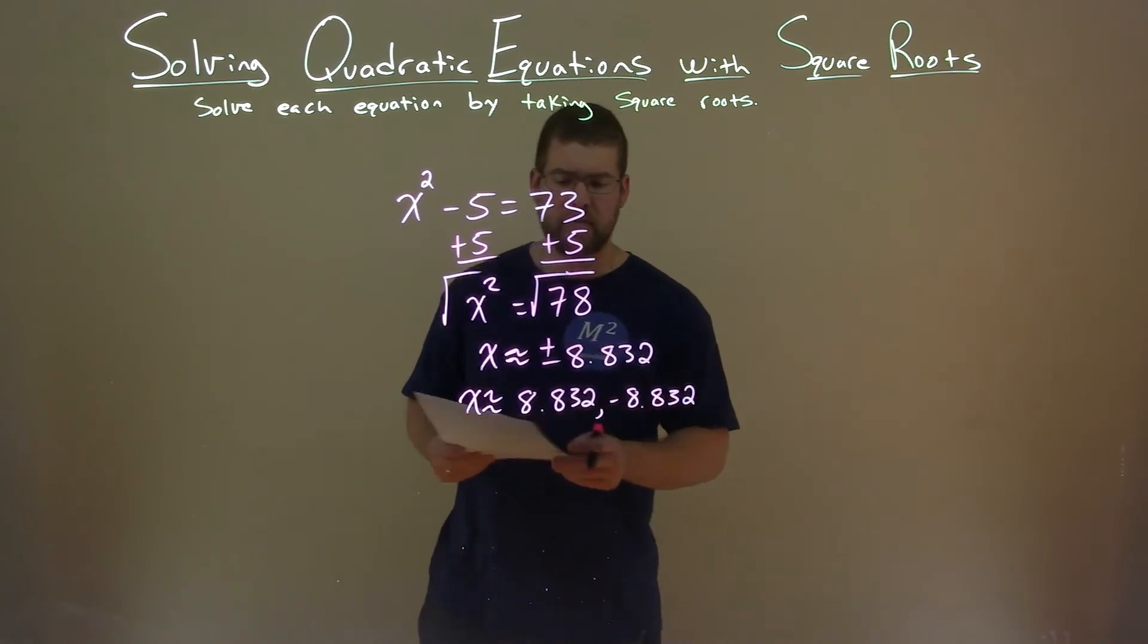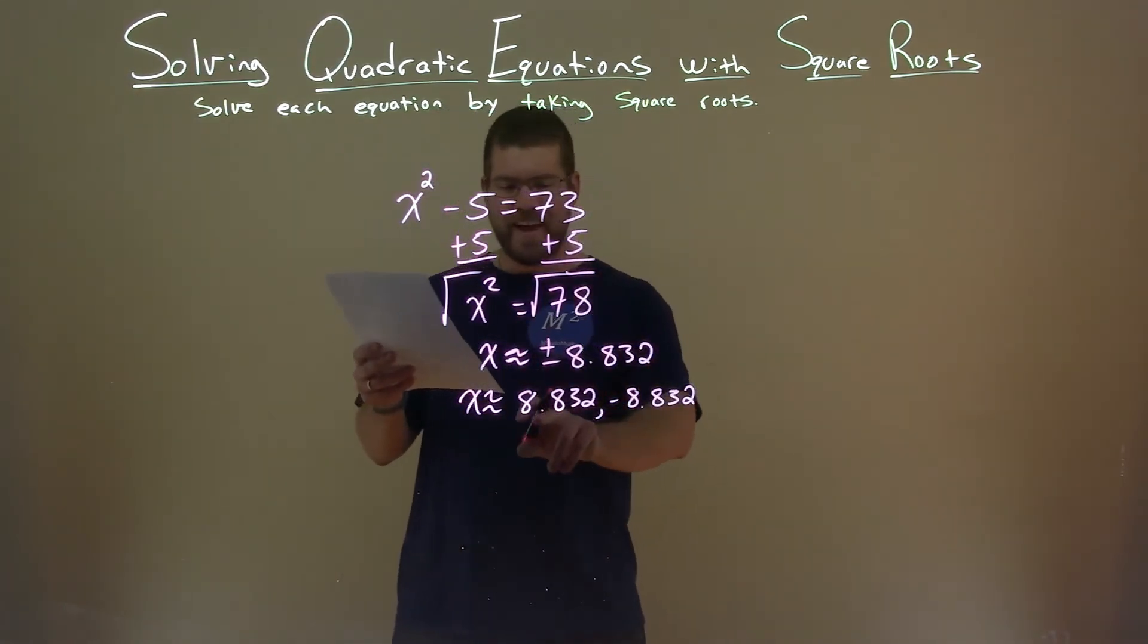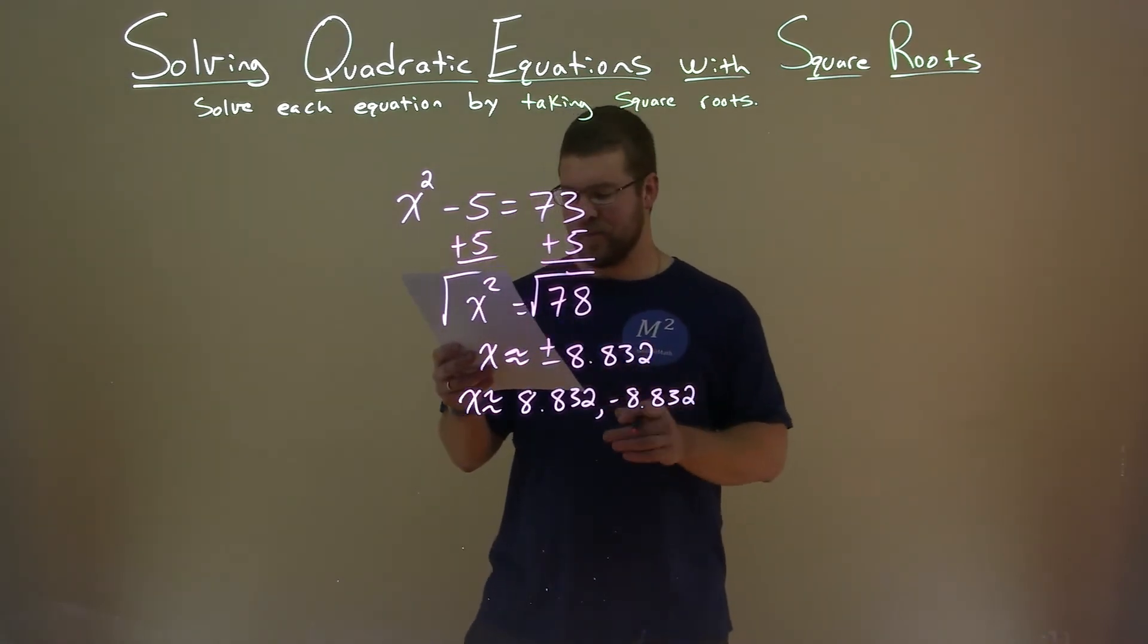So again, our final answer is x equals approximately 8.832, and then negative 8.832.